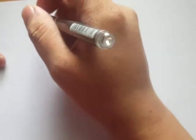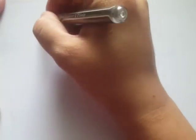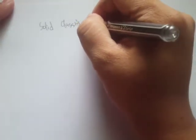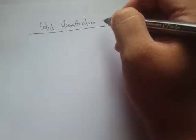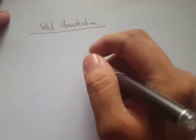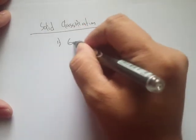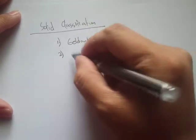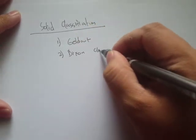Welcome back. We'll continue our discussion on pneumatic conveying systems. Let's talk about solid classifications — how we determine the behavior of these materials when handled in a pneumatic conveyor. There are two kinds of classification used: one is the Geldart classification, and the other is called the Dixon classification.